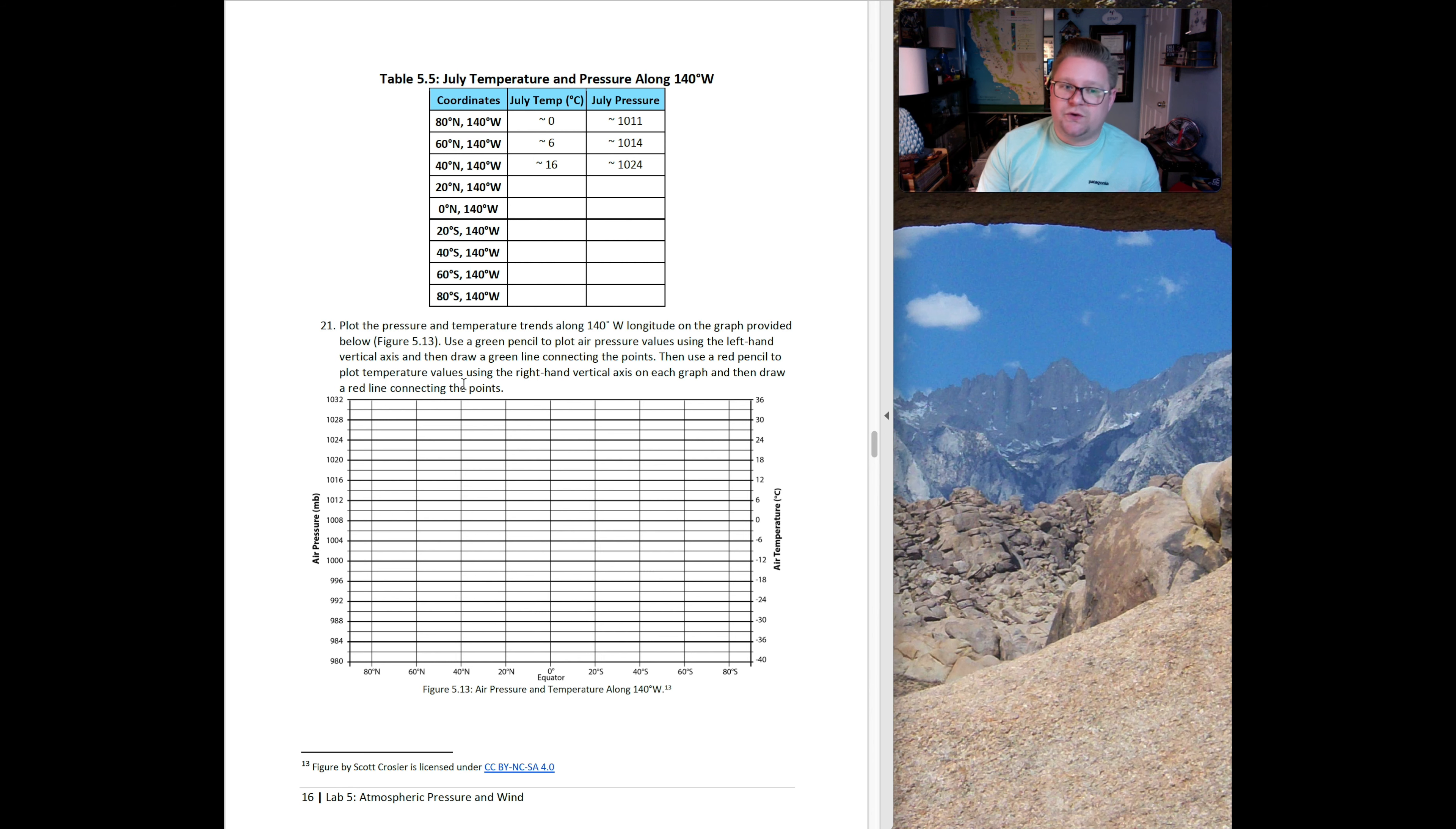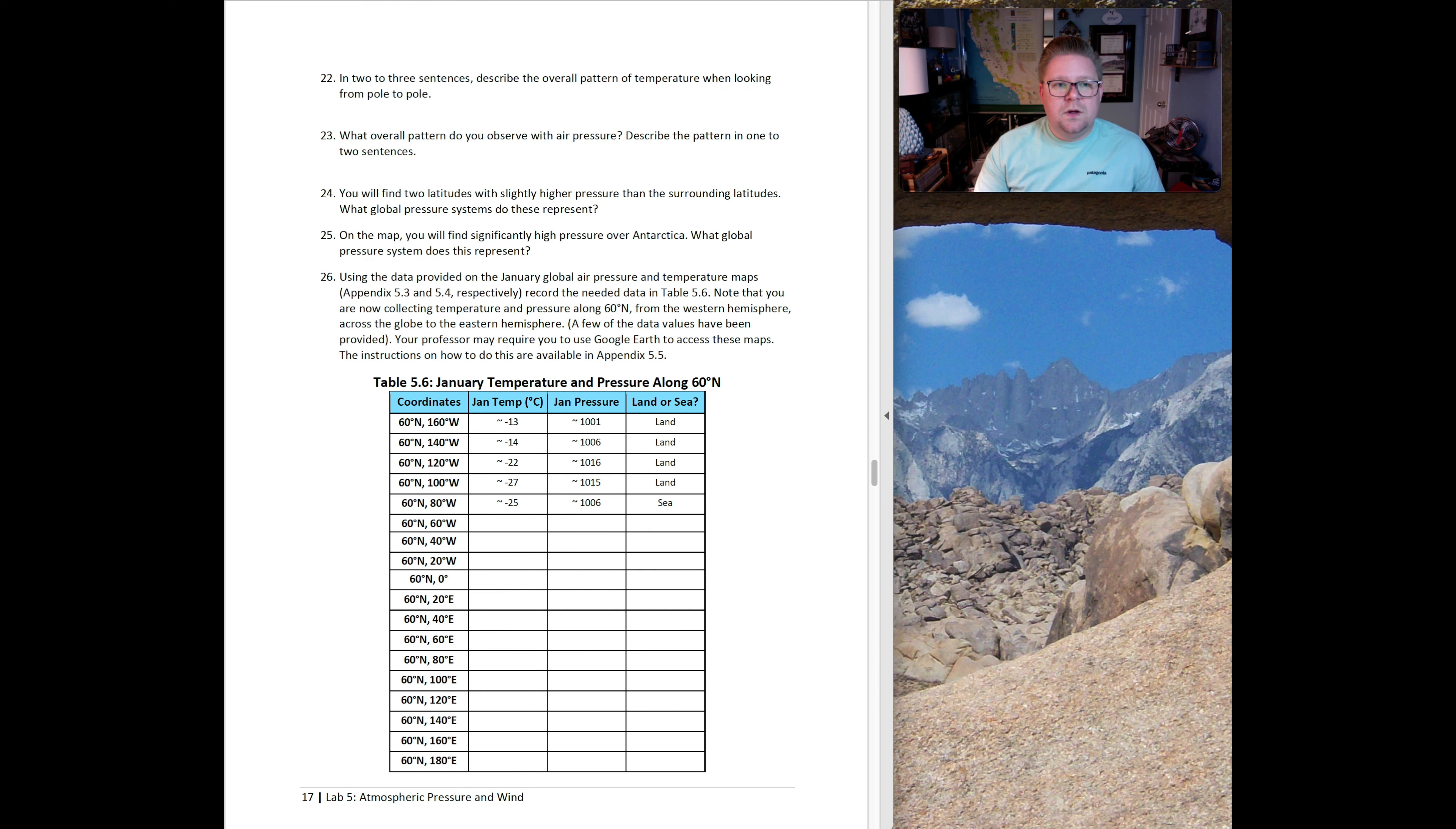Question 21 says, now plot the pressure and temperature trends along the 140 west longitude on the graph provided below. Once you take the data that's needed to plug in here, you're going to then plot it on this graph. This is July temperature and pressure along 140 degrees west longitude. We're trying to plot this map that we're going to be able to observe how things change across the entire globe. Make sure you take your time. Make sure it's as accurate as you possibly can because it makes it easier for you to plot it on the graph below.